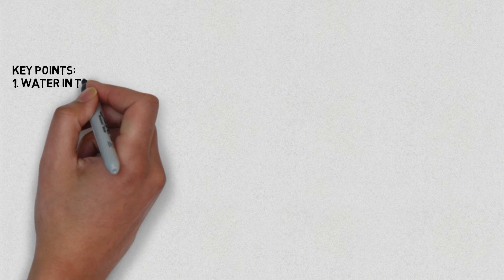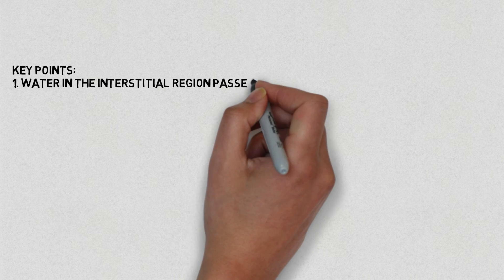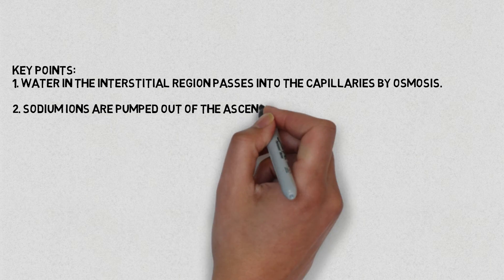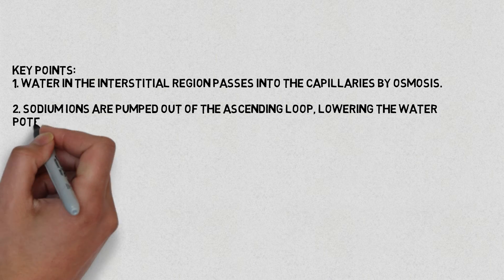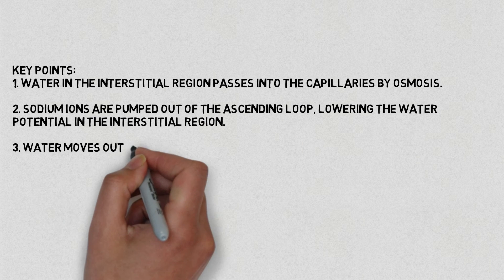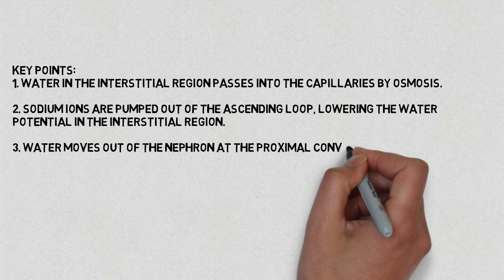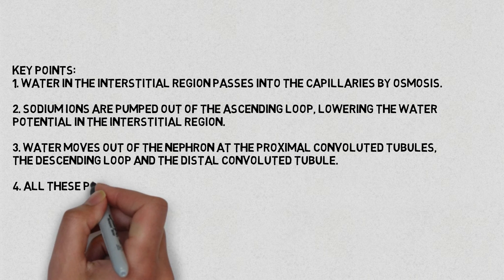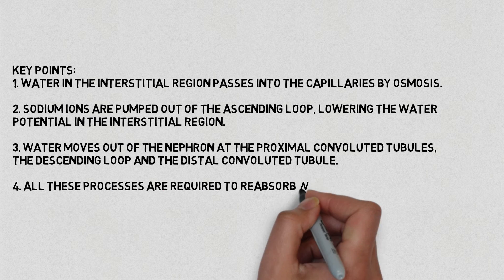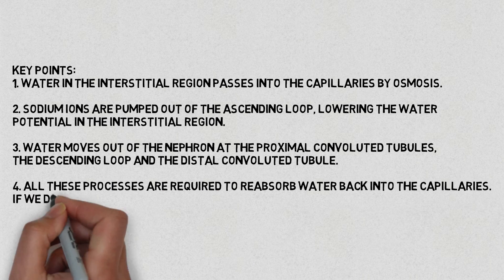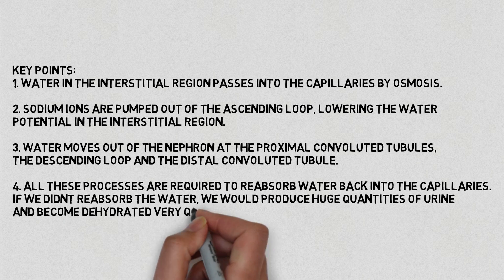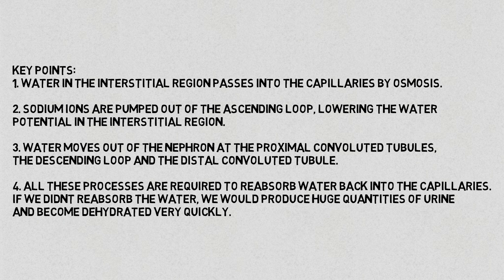The key points to remember are: water in the interstitial region passes into the capillaries by osmosis; sodium ions are pumped out of the ascending loop, lowering the water potential in the interstitial region; and water moves out of the nephron at the proximal convoluted tubule, the descending loop, and the distal convoluted tubule. All these processes are required to reabsorb water back into the capillaries. If we did not reabsorb the water we would produce huge amounts of urine and become dehydrated very quickly.